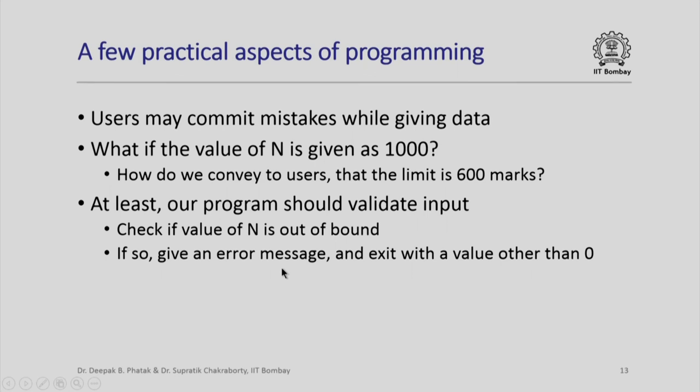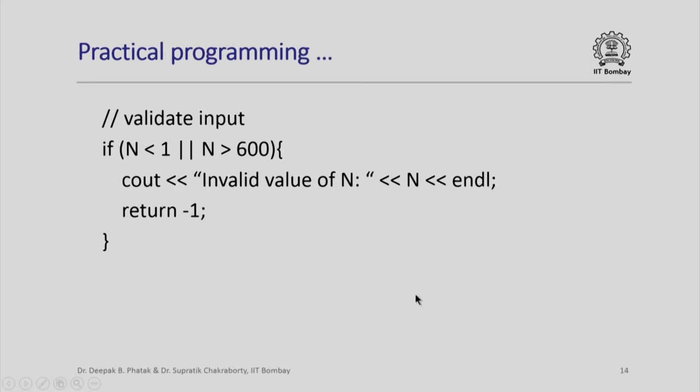How do we exit the program? We normally say return 0. This time we say return with some value other than 0, so that the operating system is conveyed the fact that program did not work properly. So, this is the code for validating input.